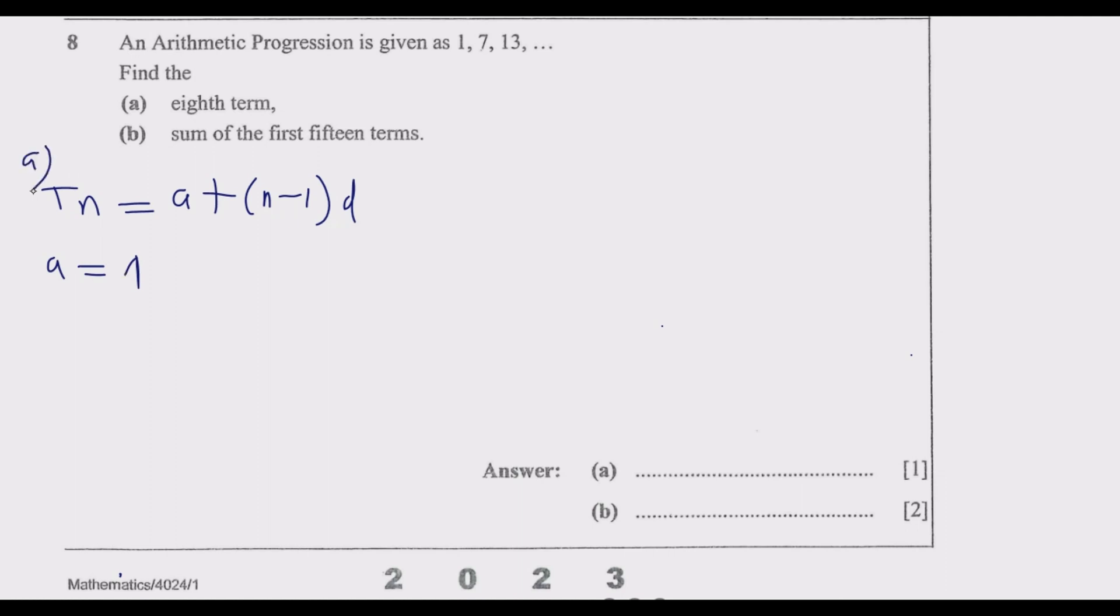How do you find these values? What is a from what we've been given? a is 1, the first term. We are looking for the eighth term, so n equals 8. Then we need to find d, the common difference. d is given by the second term minus the first term, which should be the same as the third term minus the second term, because this difference needs to be constant.